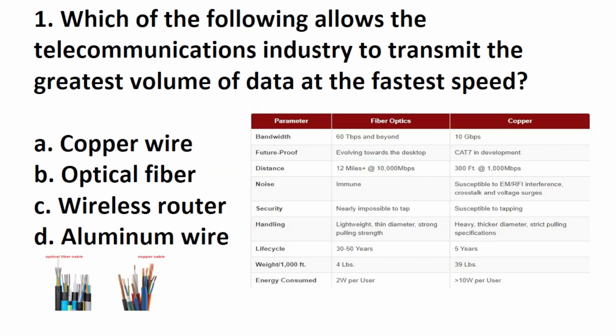This first question says, which of the following allows the telecommunications industry to transmit the greatest volume of data at the fastest speed? Right off the bat, you should be able to narrow this down between copper and optical fiber. Here's the chart that compares the two. As you can see, fiber optics or optical fiber has a lot more bandwidth and a lot more range.